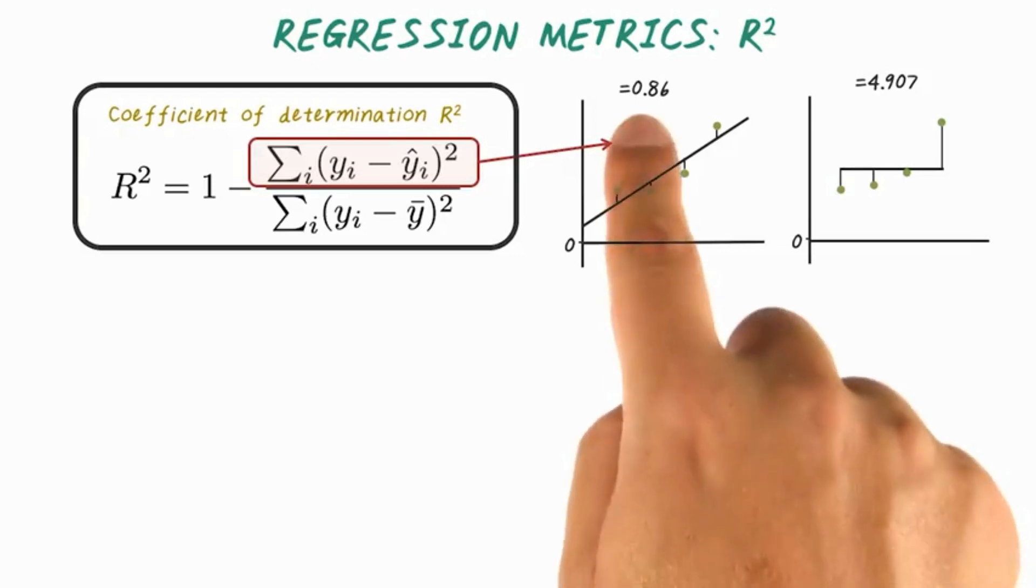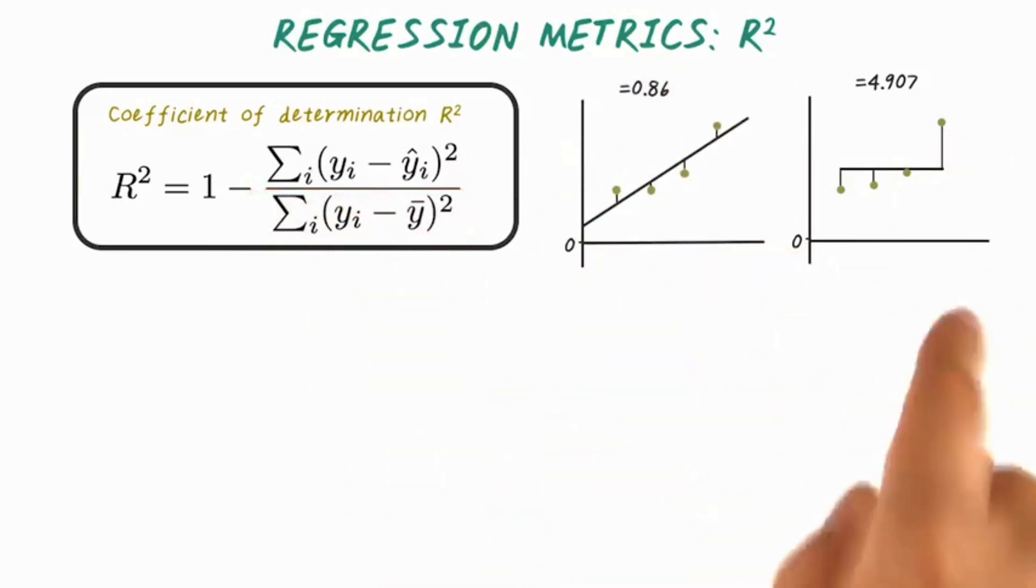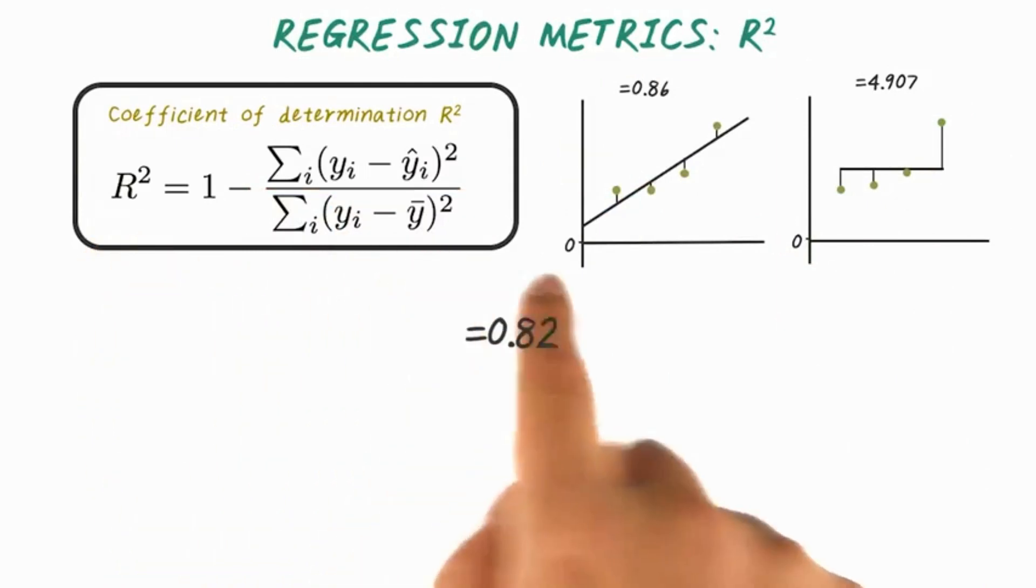While the variance equals 4.9, and R squared for this particular example is around 0.82, which is considered to be very good. In fact, R squared of one indicates the regression perfectly fits data, while R squared of zero indicates the line does not fit the data at all.